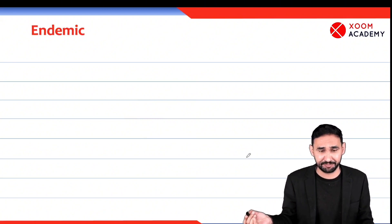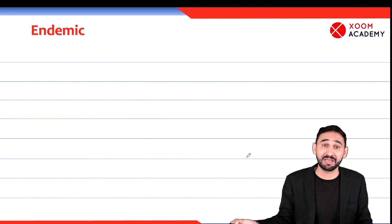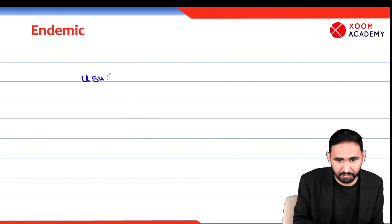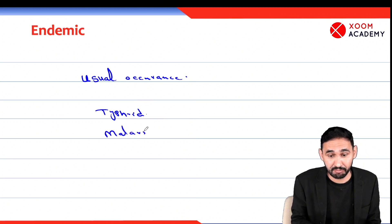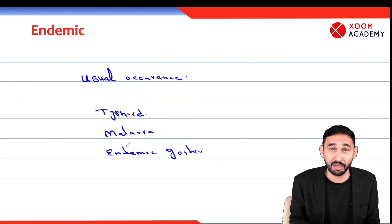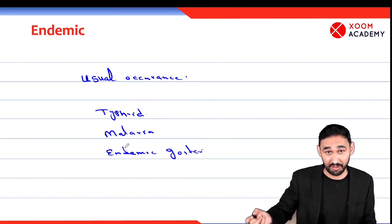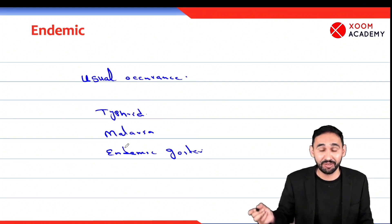Now we will discuss endemic. What is endemic? Some diseases usually occur, or some diseases appear in every season, or some diseases are present during the whole year — this is called endemic. We can say the usual occurrence of a disease is called endemic. Like typhoid is endemic in Pakistan, malaria is endemic in Pakistan, or endemic goiter. All these diseases are present in normal frequency in our population. A common MCQ: usual occurrence of disease is called endemic, not epidemic.